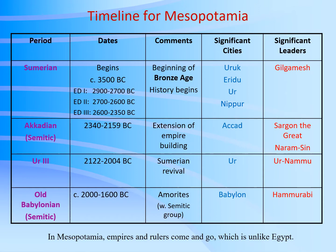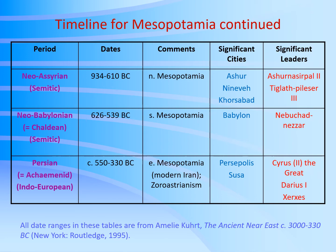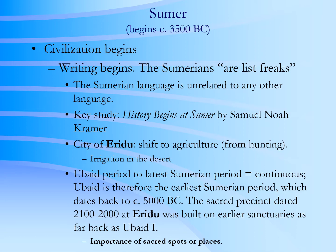The next two slides give a timeline for Mesopotamia, covering the more prominent kingdoms of that area. Civilization begins at Sumer, the earliest civilization of Mesopotamia. In fact, a very famous book by one of the great scholars on Sumer, Samuel Noah Kramer, is titled History Begins at Sumer.